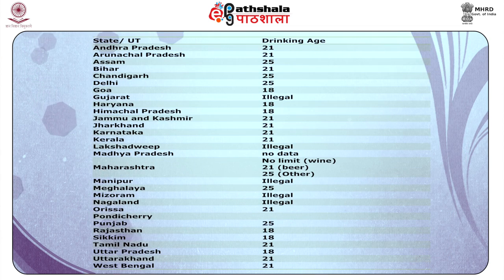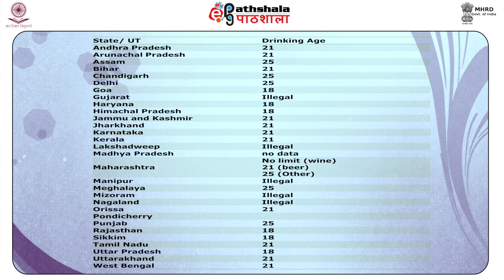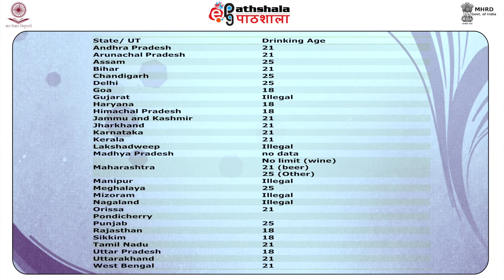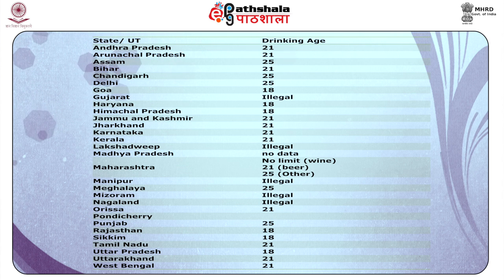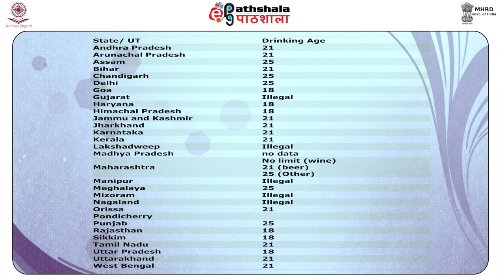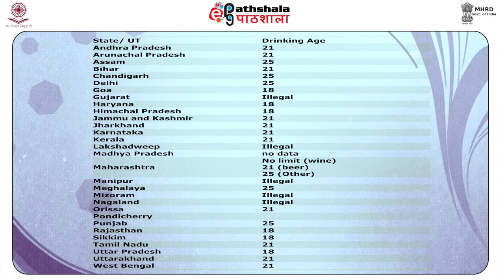Moving on to the legal drinking age in various states of India: as indicated clearly in the table, different states have different ages specified for legal drinking. Some states, like Gujarat, completely prohibit alcohol consumption.